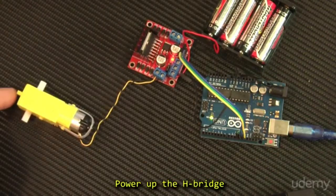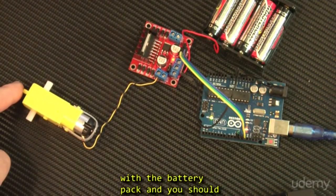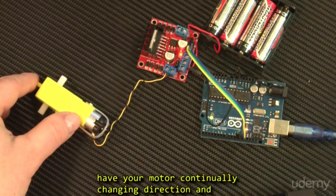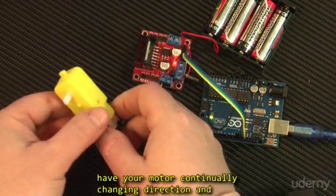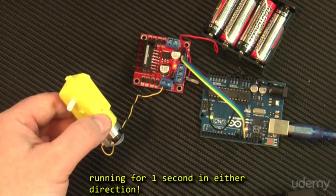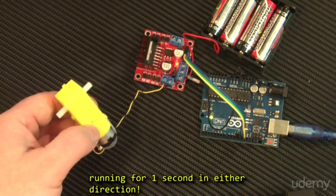Power up the H-bridge with the battery pack, and you should have your motor continually changing direction, and running for 1 second in either direction.